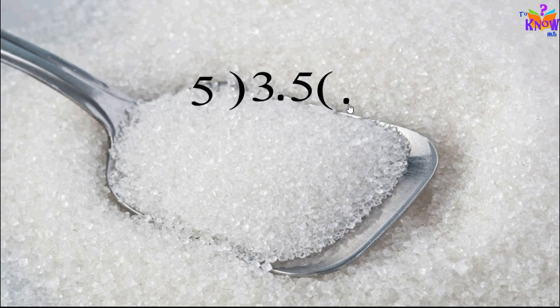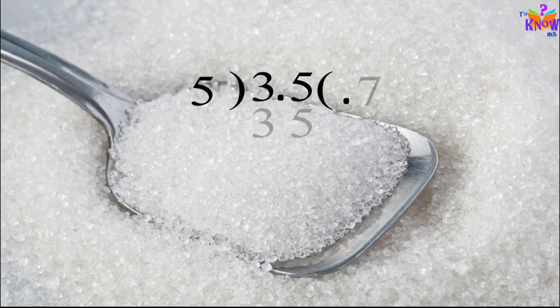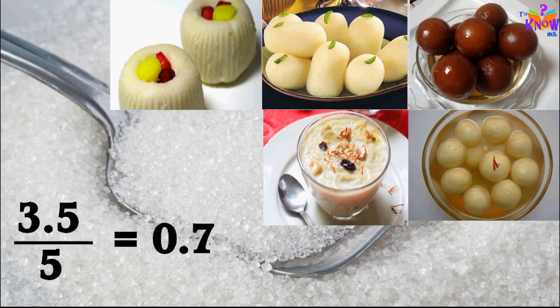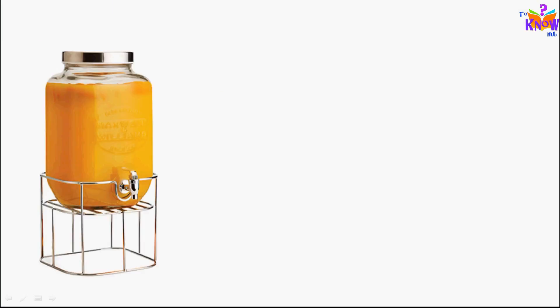So 35 divided by 5, just like simple division. 7 times 5 is 35. 35 minus 35 is zero. Problem solved. So 0.7 kg sugar would be used for each dish.